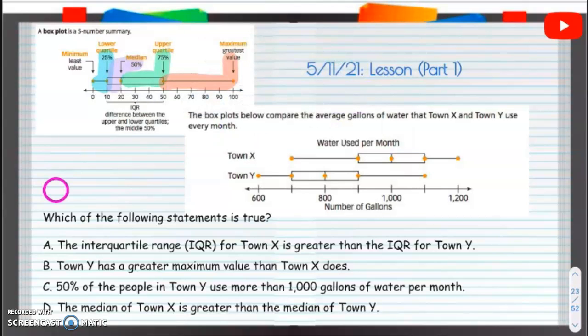All right, so which of these is true? We have box plots below that are comparing the average gallons of water that town X and town Y use every month.